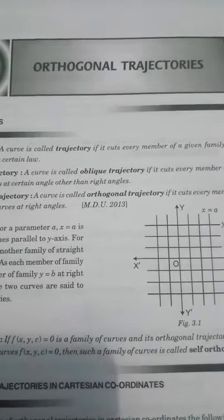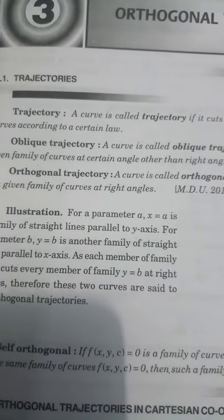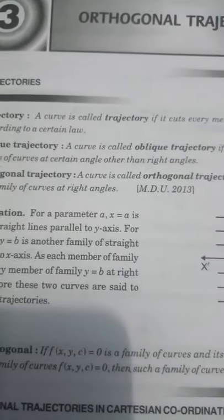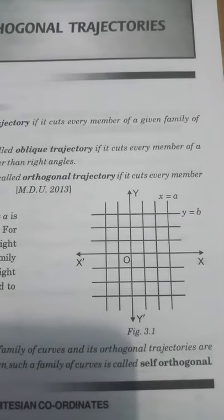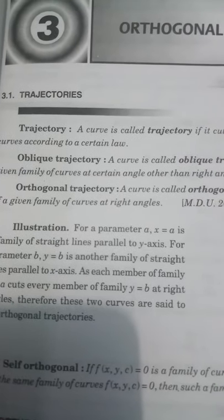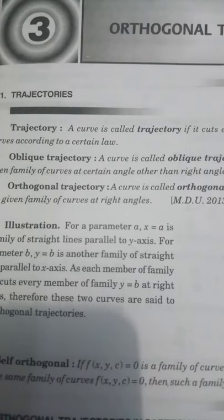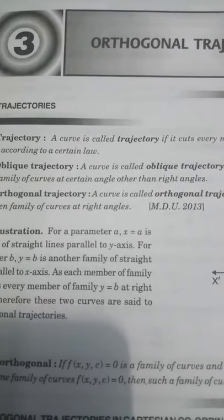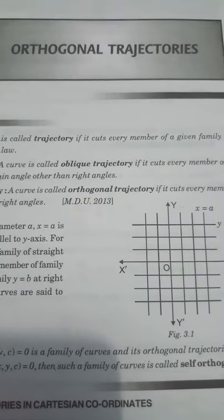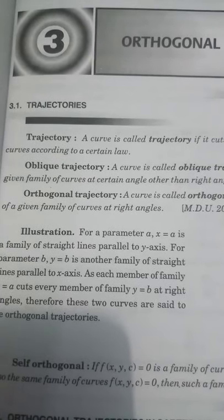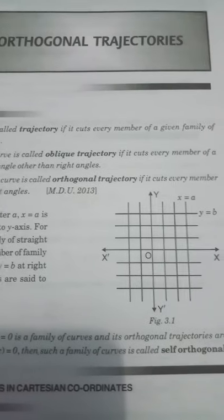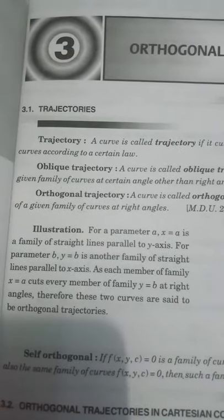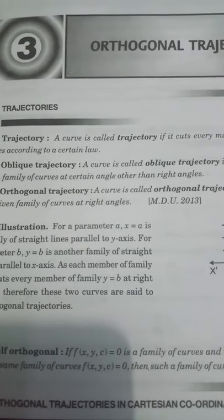The topic is orthogonal trajectories. First we define what is a trajectory. A curve is called a trajectory if it cuts every member of a given family of curves according to a certain law. A curve is called an oblique trajectory if it cuts every member of a given family of curves at a certain angle other than right angles.